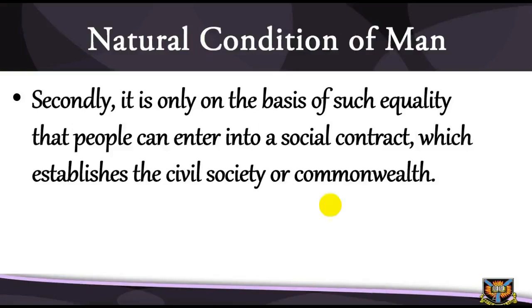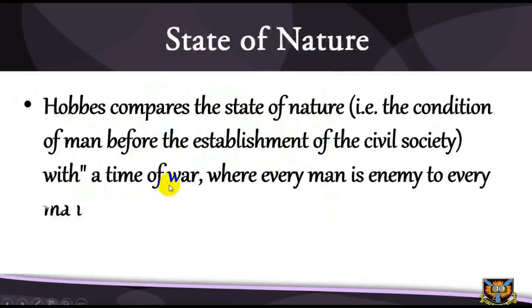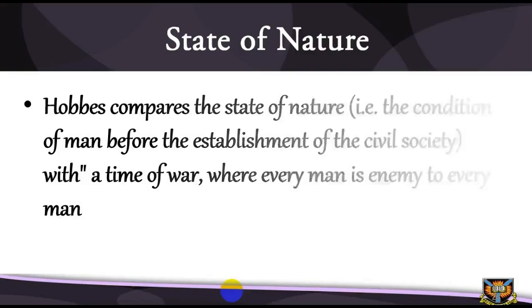On the issue of the state of nature, Hobbes compares it — that is, the condition of man before the establishment of civil society — with a time of war where every man is enemy to every man. In such a condition there is no place for industry, because the fruit thereof is uncertain, and consequently no culture, no knowledge of the face of the earth, no account of time, no arts, no letters, no society, and worst of all, continual fear and danger of violent death. The life of man is solitary, poor, nasty, brutish and short. Hobbes's concept of the state of nature is thus negative to the extreme. He says in such a condition nothing can be unjust — where there is no common power there is no law; where there is no law, no injustice — for justice and injustice are qualities that relate to man in society.